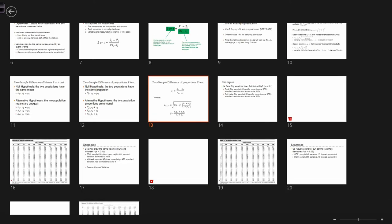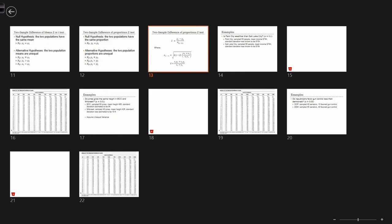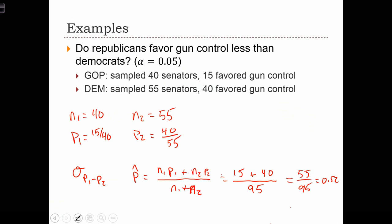Am I going to be able to remember that? Let's see. So now we have standard error P1 minus P2 equals square root P-hat times 1 minus P-hat times N1 plus N2 over N1 N2.